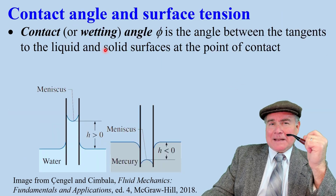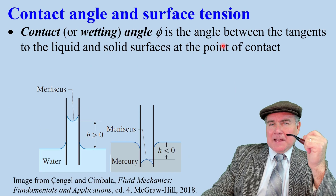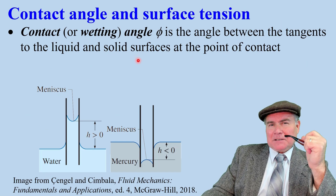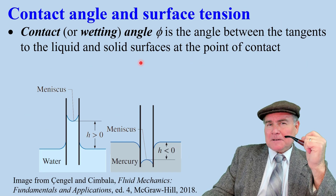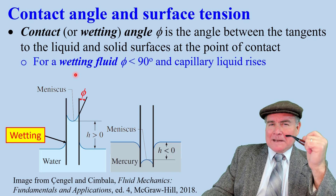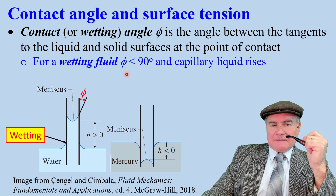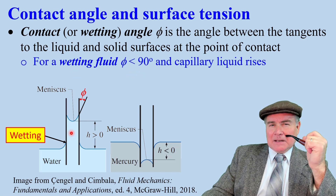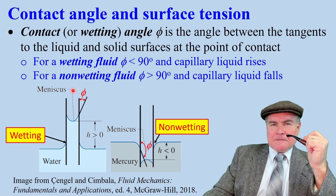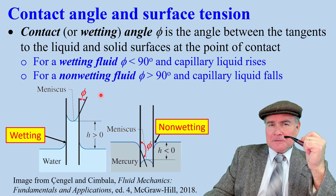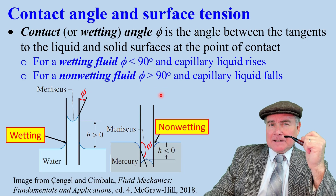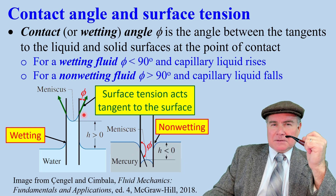We define contact or wetting angle here — it's the angle between the tangents to the liquid and solid surfaces at the point of contact. For a wetting fluid like water, phi is less than 90 degrees and the liquid rises. For a non-wetting fluid like mercury, phi is greater than 90 degrees and the liquid falls.